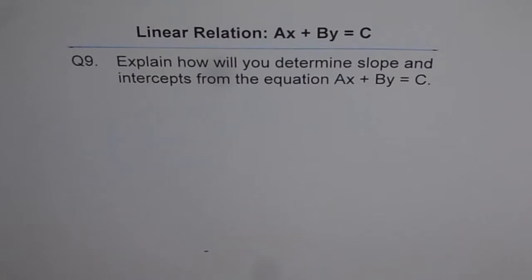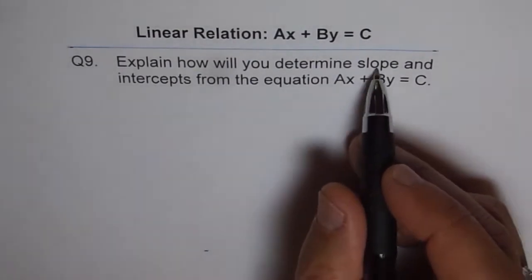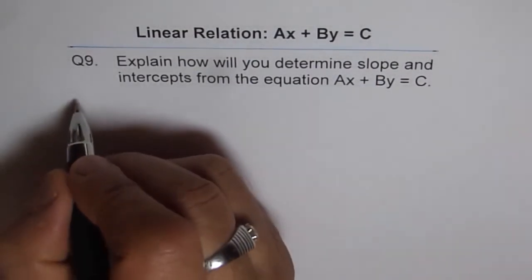Explain how will you determine slope and intercepts from the equation AX plus BY equals to C. So we can rearrange and then answer this question. Let's start with rearranging this equation to find slope. First we will consider slope.